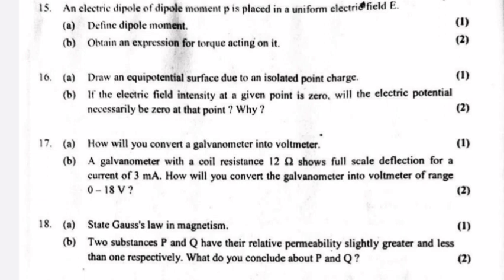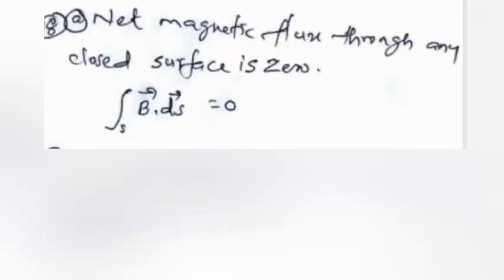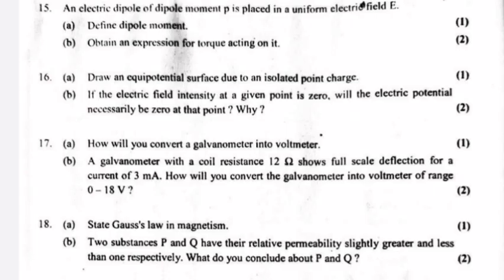Question 18 A: State Gauss's law in magnetism. B. Two substances P and Q have their relative permeability slightly greater and less than 1 respectively. What do you conclude about P and Q? Answer A: The net magnetic flux through any closed surface is zero — the integral of B·dS equals zero. Answer B: P is paramagnetic, Q is diamagnetic.